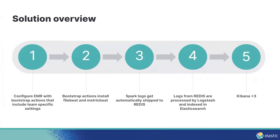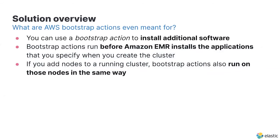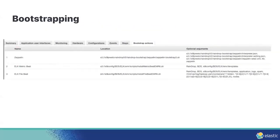Now let's do a deep dive into how we actually came to install FileBeat and MetricBeat in the right way on all of the EC2 servers, starting with bootstrap actions. Essentially, you can use bootstrap actions to install additional software on the EC2 servers in the EMR. What you see before you is a snippet from our own bootstrap actions configured for this solution — we have the MetricBeat bootstrap action and also the one for FileBeat. Each one runs a different bash script and receives different configuration variables.